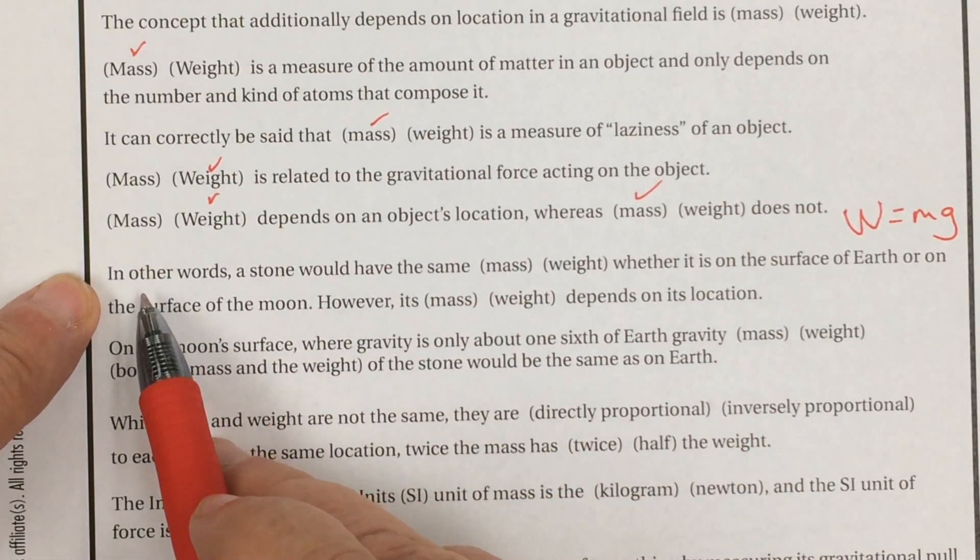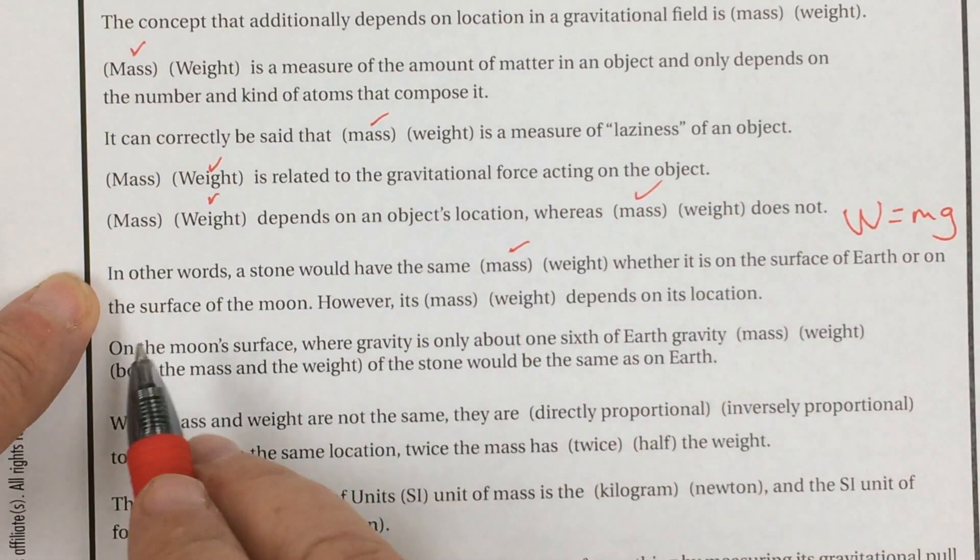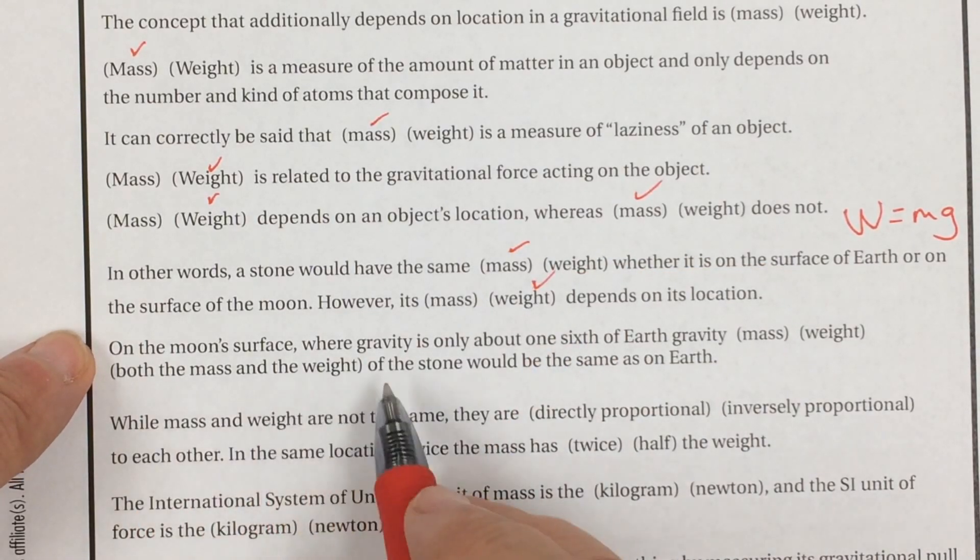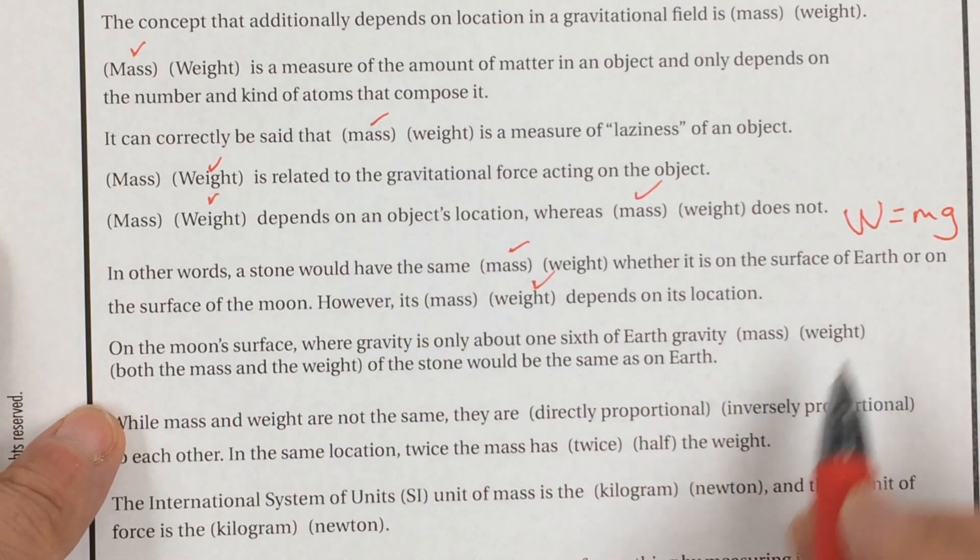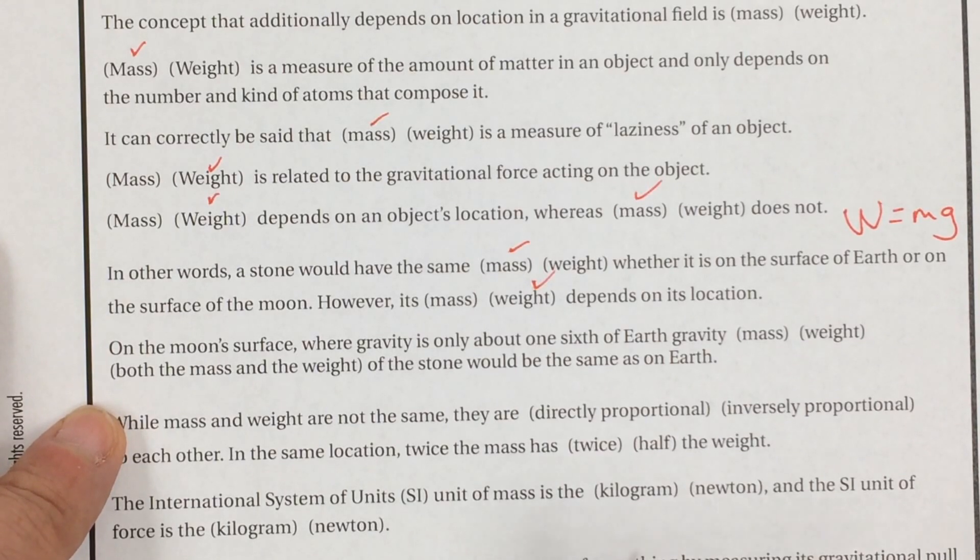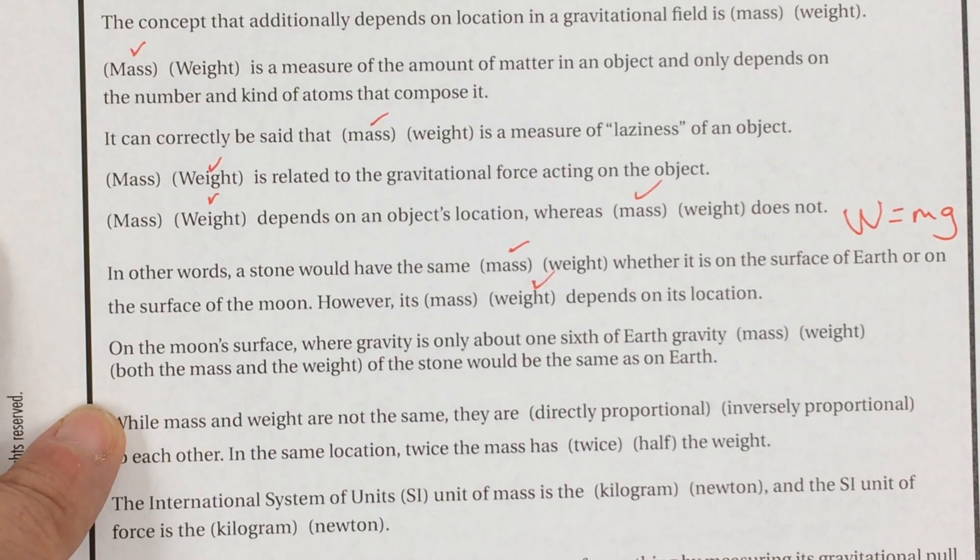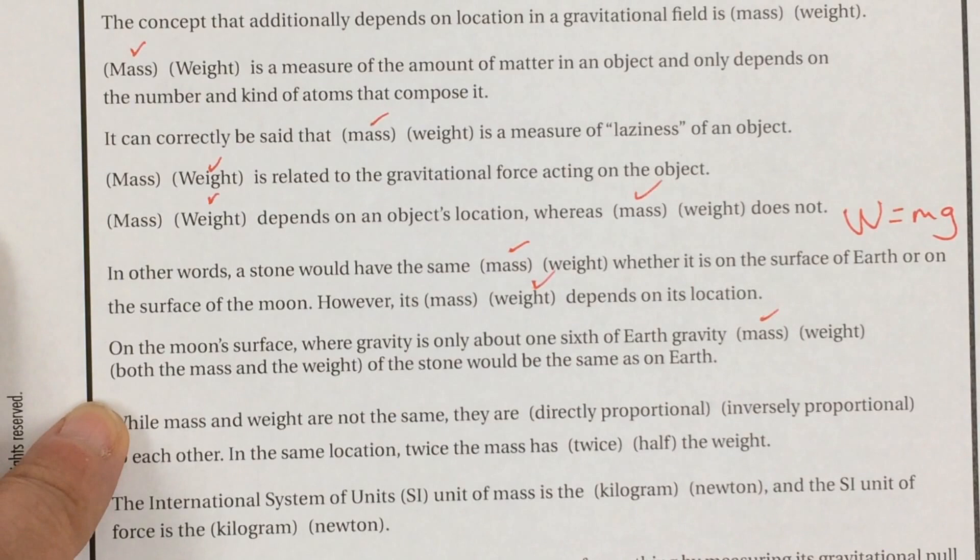In other words, a stone would have the same mass whether it's on the surface of the Earth or the surface of the moon. However, its weight depends on its location. On the moon's surface, where gravity is only about a sixth of the Earth's gravity, which one would be the same? I think there are three choices: would be mass would be the same, weight would be the same as the Earth, or both mass and weight would be the same as the Earth. Mass would be the same as the Earth. But the weight would change.